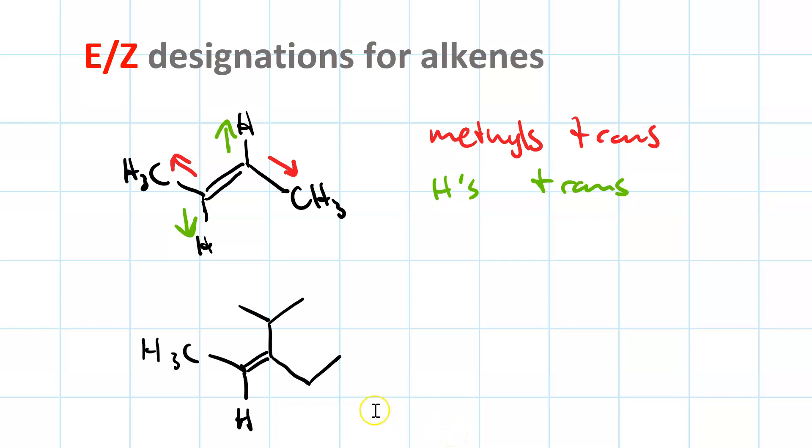What about this molecule? The methyl is trans to the ethyl, but the methyl is cis to the isopropyl. Do we call this cis or trans? Well, neither one applies.